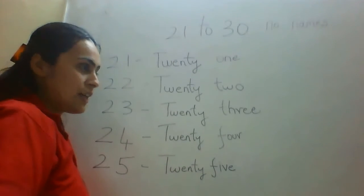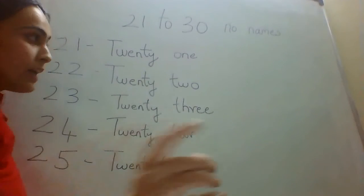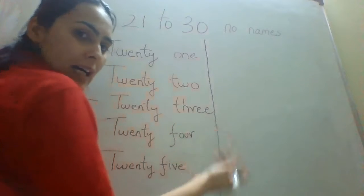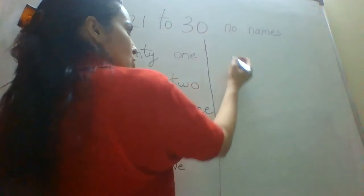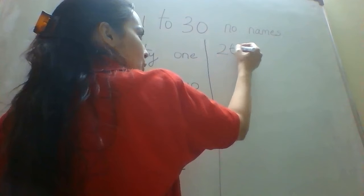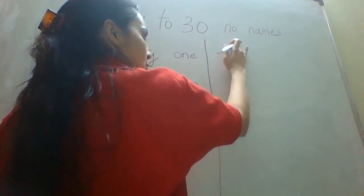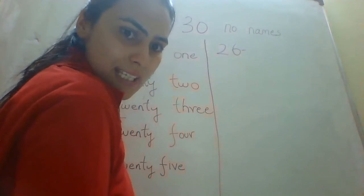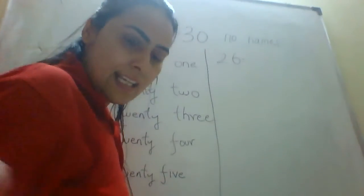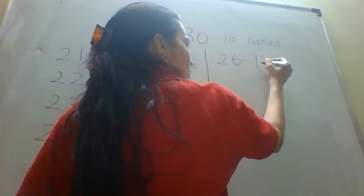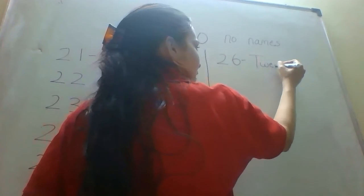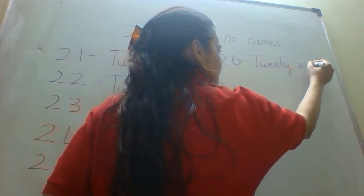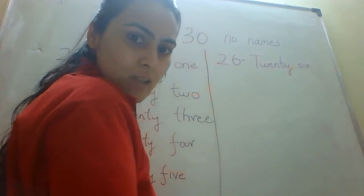Now, what comes after 25? I will be writing on the other half of the board. So we have 26. What is 26? 26 is twenty-six. T-W-E-N-T-Y, S-I-X. That is 26.